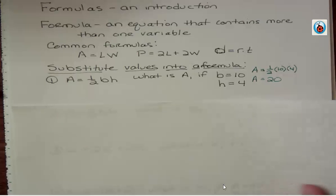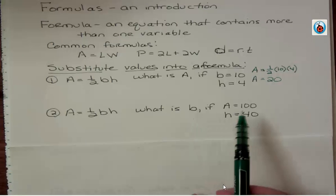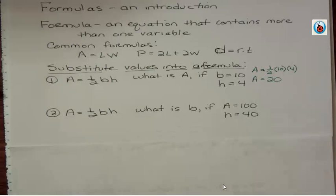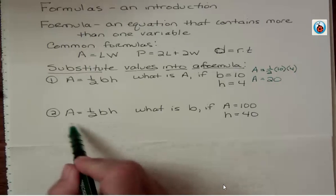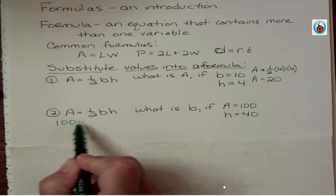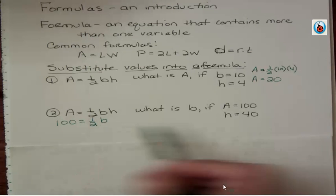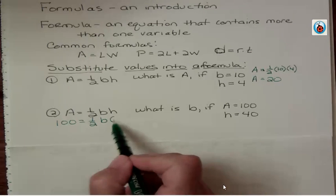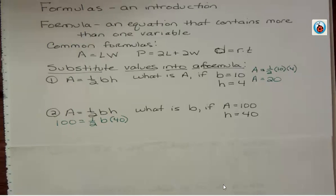In a more complicated example, using the same formula: what is b if A = 100 and h = 40? Now I was given A to be 100, I still have the 1/2, I don't know b, but I do know h = 40. Whatever you're given, you substitute in, then solve for b.